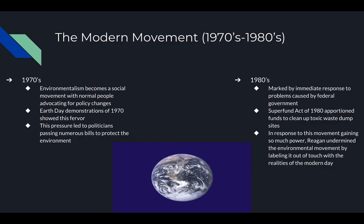In response to the environmental movement gaining so much power, Ronald Reagan led an anti-environmental movement in the late 80s by appointing James G. Watt — described as one of the most blatantly anti-environmental political appointees — as Secretary of the Interior. Together, they allowed industry groups to lobby for weakened regulation and successfully portrayed environmental groups as out of touch with the needs of mainstream culture.